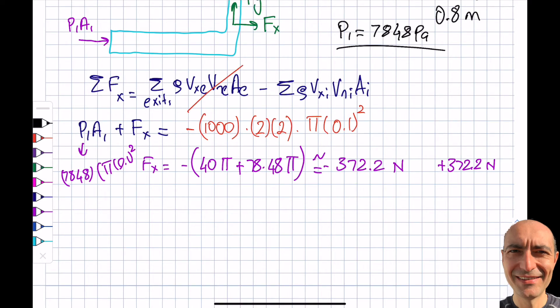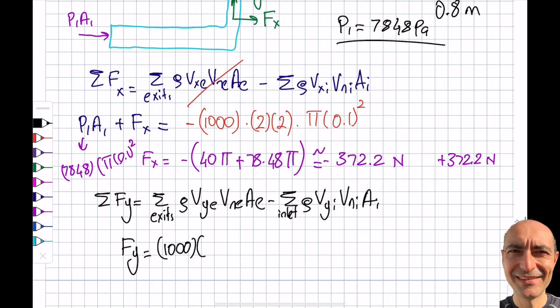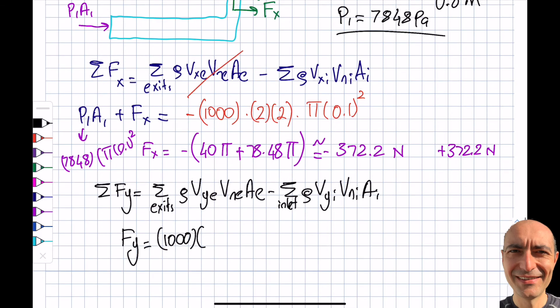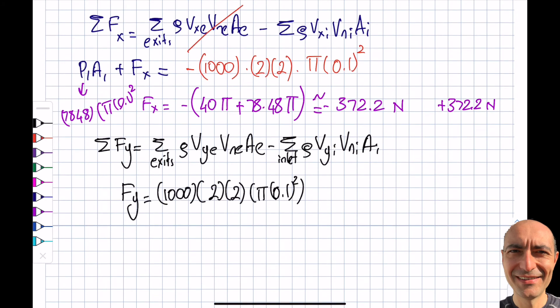The next is to go with the y direction. So Fy: wherever I see x in the equation above I write y. Rho Vy exit Vn exit A exit minus rho Vy inlet Vn inlet A inlet. Looking at my free-body diagram, you will see that I only have Fy. This will be equal to—the exit is 1000, Vy exit, looking at the exit is this way, y is that way, so it's going to be plus 2. Vn is 2, area is pi times 0.1 squared. Looking at this term, Vy inlet—the component of the velocity in the y direction will be 0, so I don't have to worry about it. Straight out this will be my answer.